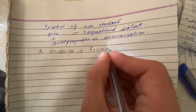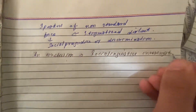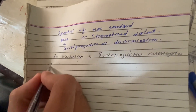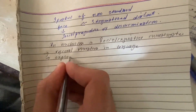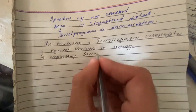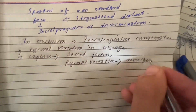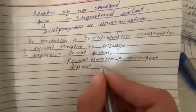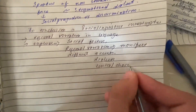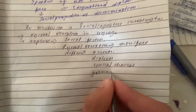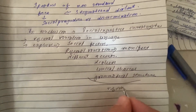In conclusion, sociolinguistics investigates regional variations in language and explores how this variation relates to social factors. Regional variation can manifest in different accents, dialects, lexical choices, and grammatical structures across regions.